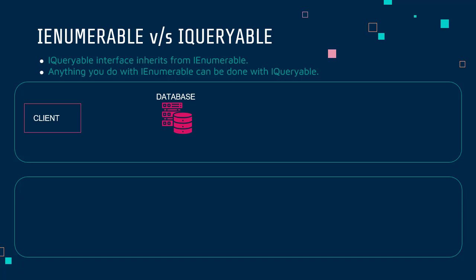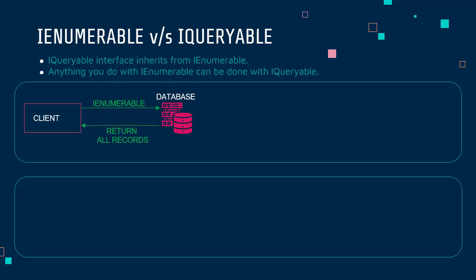We have a client and we have a database. When we use IEnumerable to query something in our database, it will always return all the records of that table — even if you had a WHERE condition to filter the data. When it retrieves the records from the database, all the records are returned back to the client, and then the filter is applied in memory.